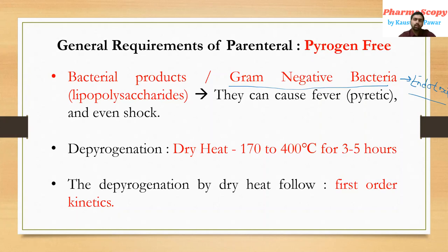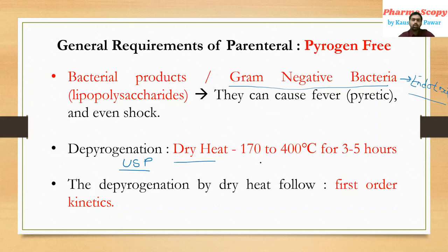To get a pyrogen-free parenteral product, there is a technique called depyrogenation. According to USP, depyrogenation uses dry heat at 170 to 400 degrees Celsius for 3 to 5 hours. Please remember this temperature and time, because two consecutive years had questions on depyrogenation.